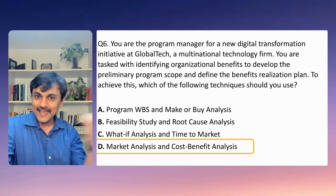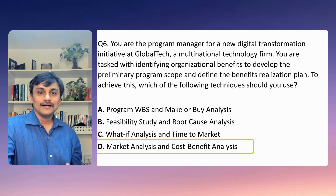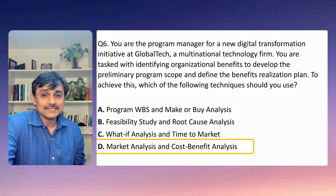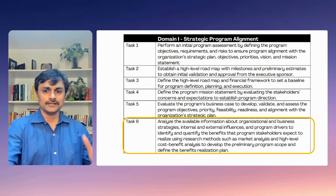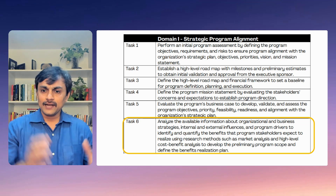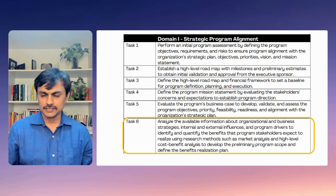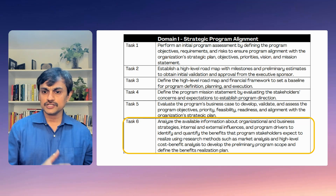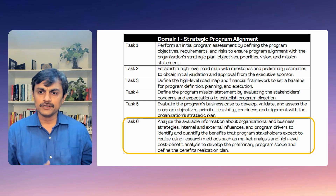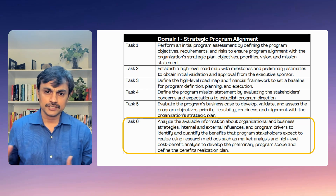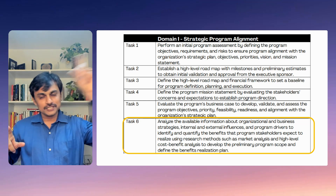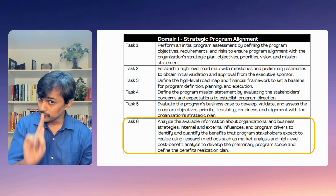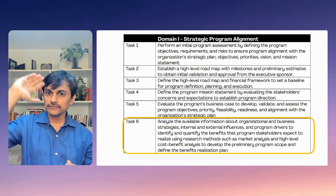This answer also maps directly to task six of strategic program alignment in the ECO: 'Analyze available information using research methods such as market analysis and high-level cost-benefit analysis to develop the preliminary program scope and define the benefit realization plan.' Without memorizing the ECO, you can find the answer through careful elimination, but browsing these statements a few times will reinforce recognition. Careful elimination during both mock exams and your final exam is essential.